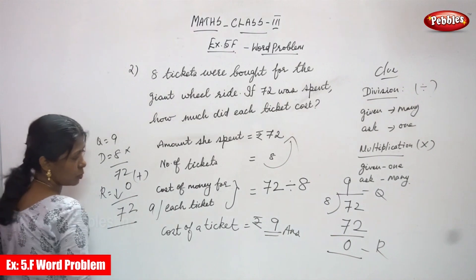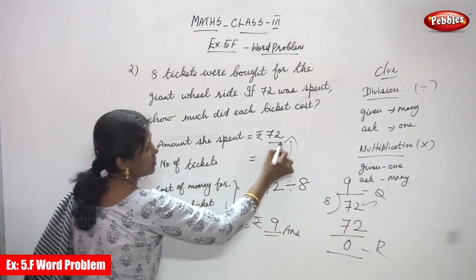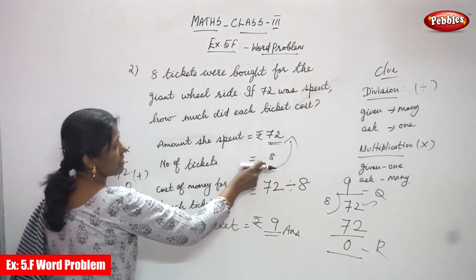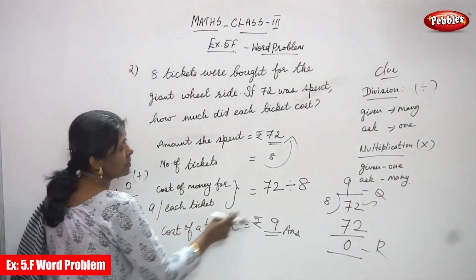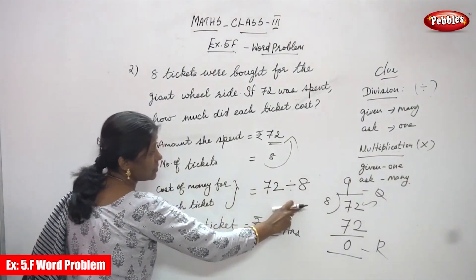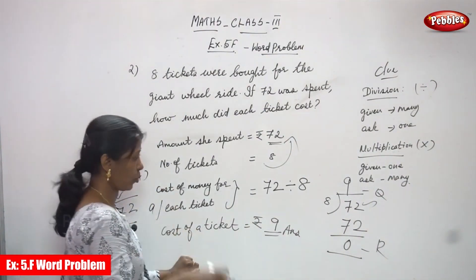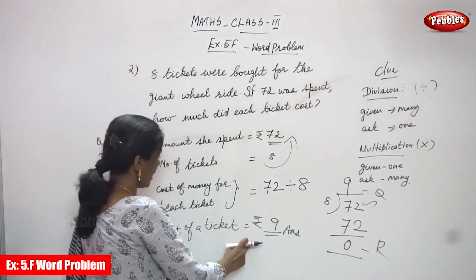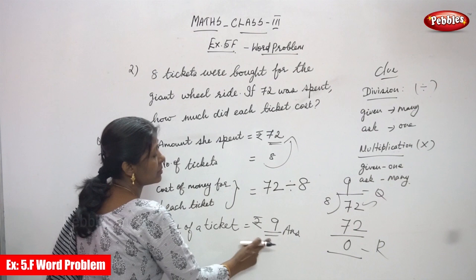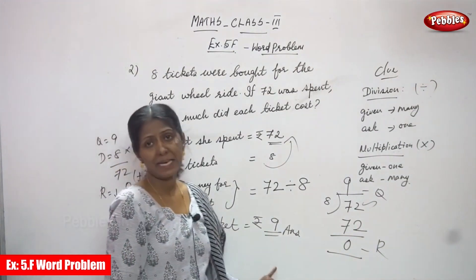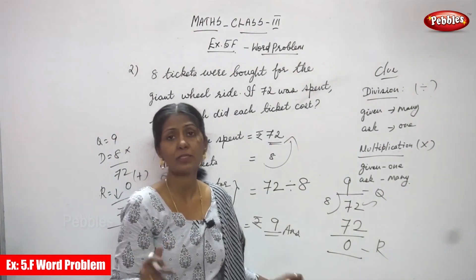So you can get the dividend back — 72. That is the cost of 8 tickets, which confirms our answer. The division clue: given many and ask one — so 72 divided by 8 gives the cost of each ticket, which is rupees 9. Rupees 9 is the right answer — the cost of a ticket is rupees 9.